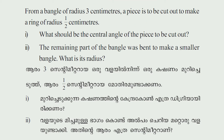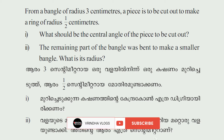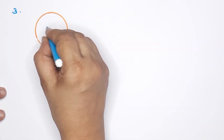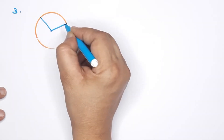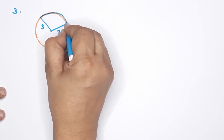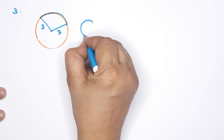Third question: From a bangle of radius 3 centimeters, a piece is to be cut out to make a ring of radius half a centimeter. What should be the central angle of the piece to be cut out? The remaining part of the bangle was bent to make a smaller bangle — what is its radius? So we have a bangle of radius 3 centimeters, and we cut a piece whose arc length equals the circumference of a ring of radius 0.5 centimeters.